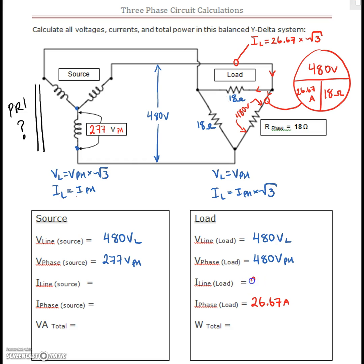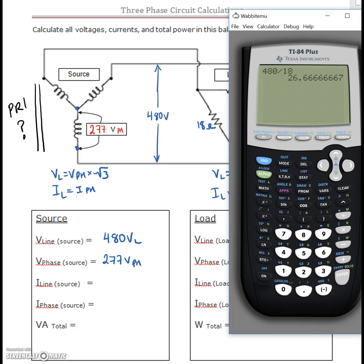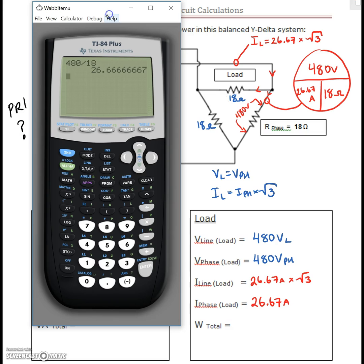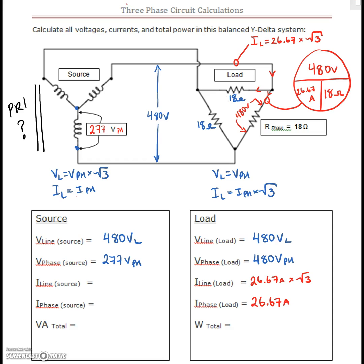So here we've got 26.67 amps times root 3. That gives us 46.19 amps. And that's our value on the line. So the current on the outside is equal to 46.19 amps. We can clearly see that current is coming right from here, 46.19 amps on the line.